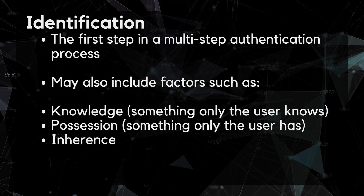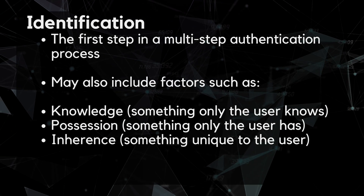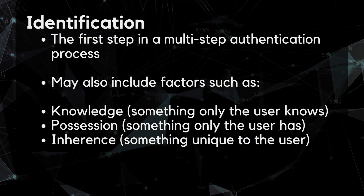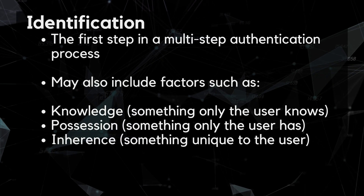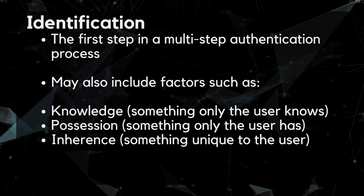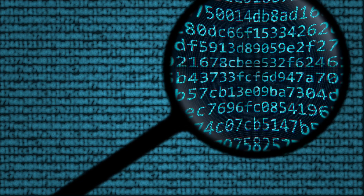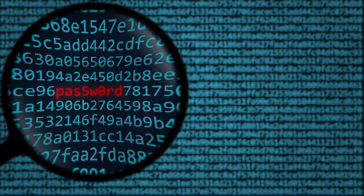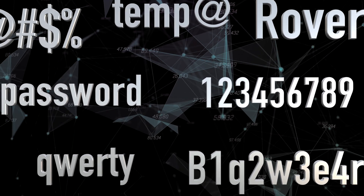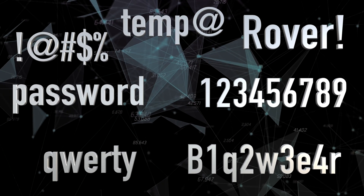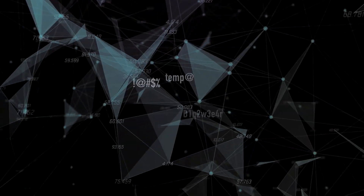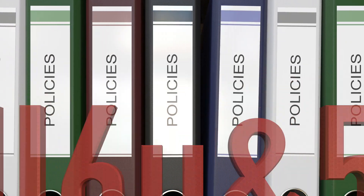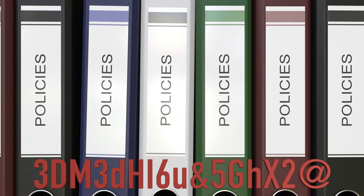Identification is typically the first step in a multi-step authentication process, which may also include factors such as knowledge — something a user knows — possession — something a user has — and inheritance — something unique to an individual like a fingerprint. One important consideration in identification is the use of strong passwords. Weak passwords, such as common words or easily guessable combinations, can easily be compromised by attackers. Organizations should establish password policies that require users to choose strong, unique passwords and to change them periodically.